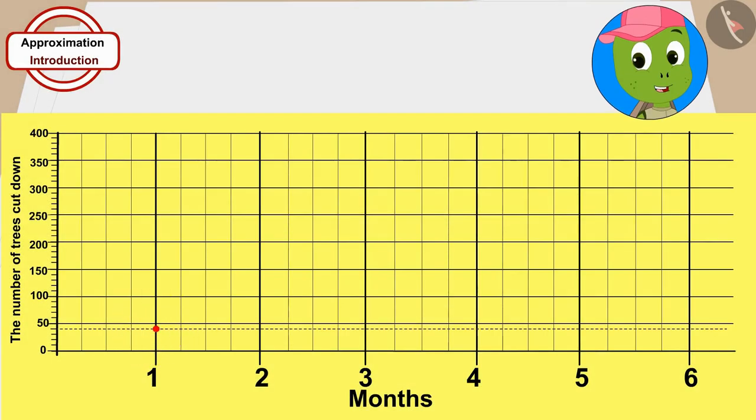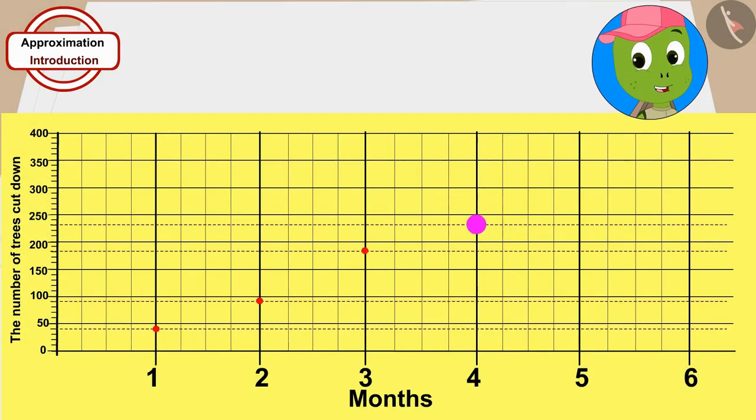At the end of each month, Tufan counted the number of trees cut and recorded this on the paper. Six months have passed.